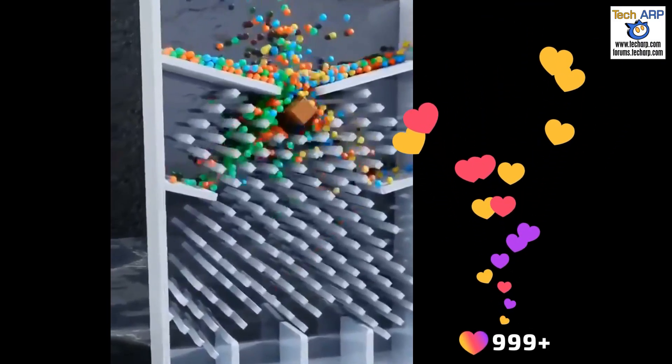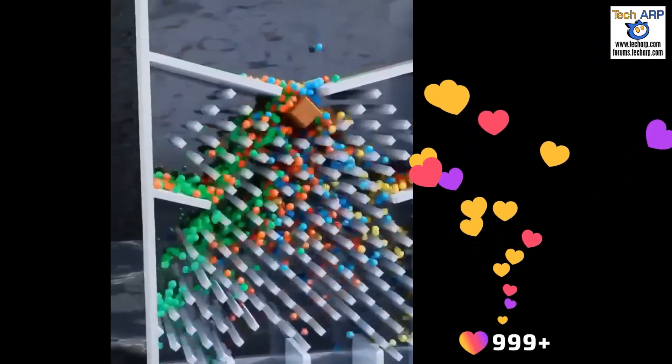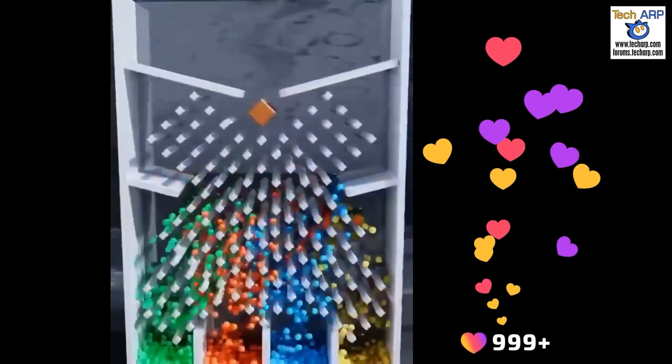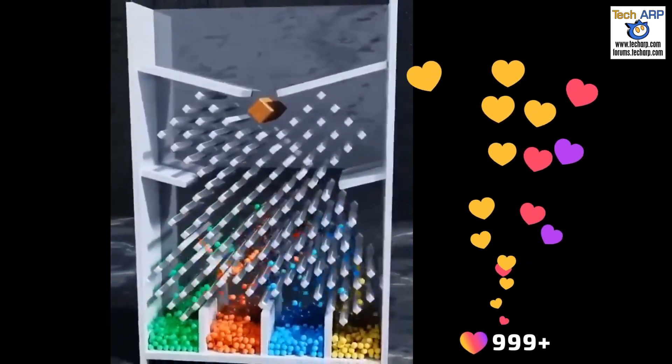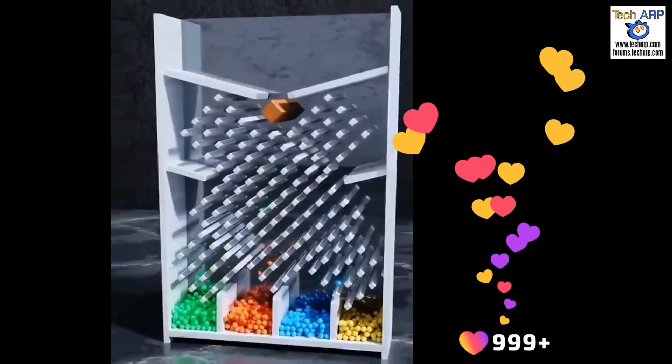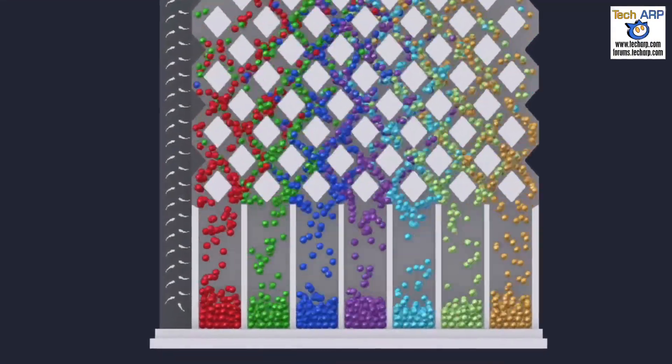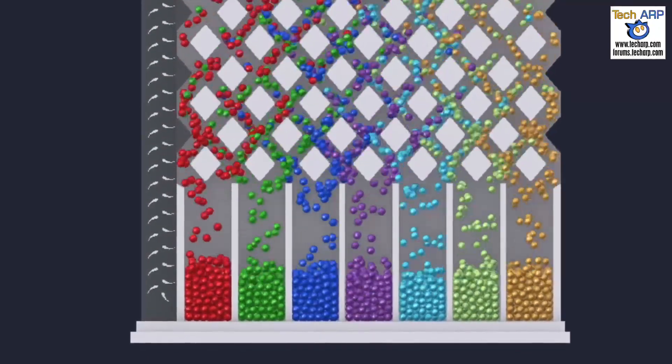However, even they cannot simulate the proper sorting of the balls according to their colors. So what they do instead is bake the simulation and then color the balls after they have fallen. All they then have to do is render the baked simulation with the colored balls into a video.